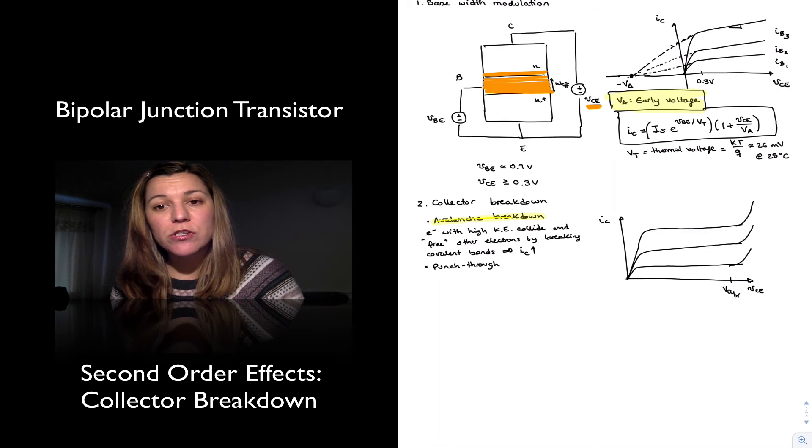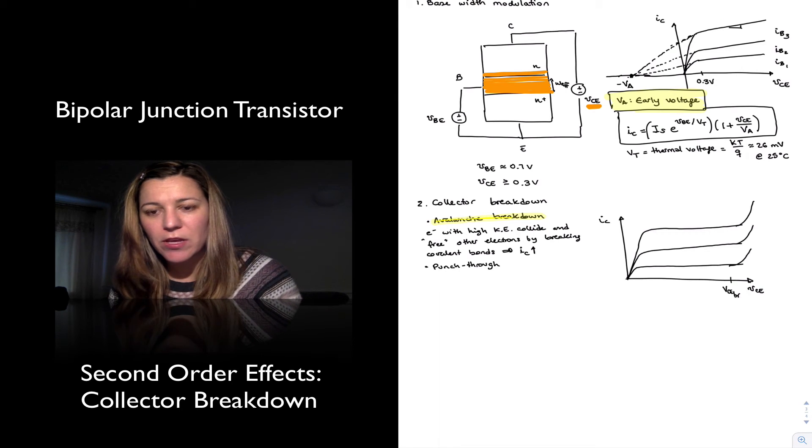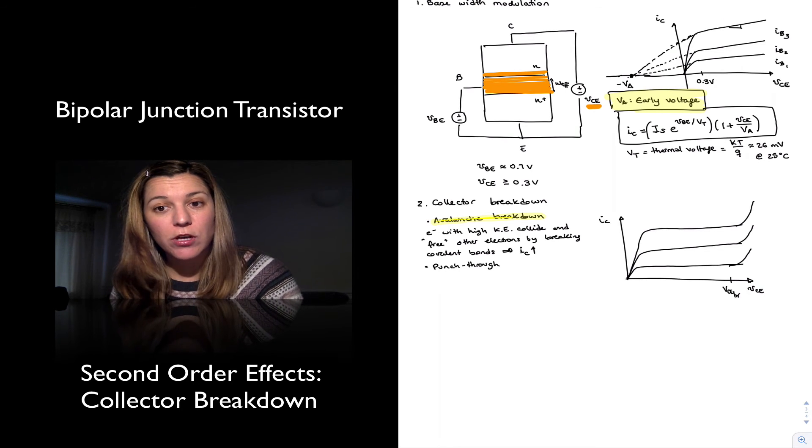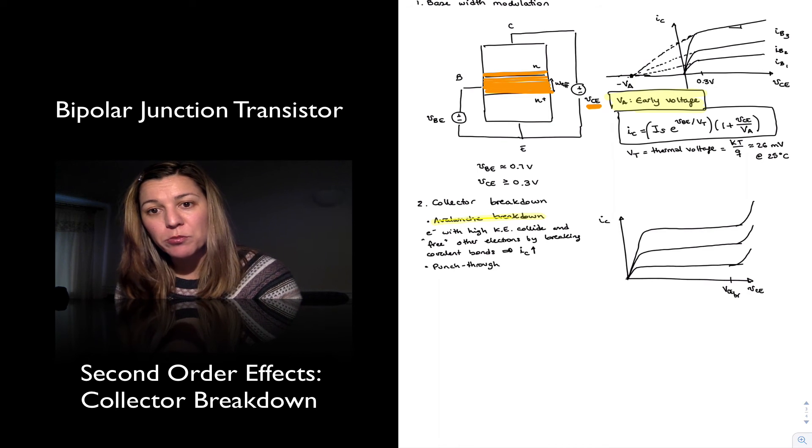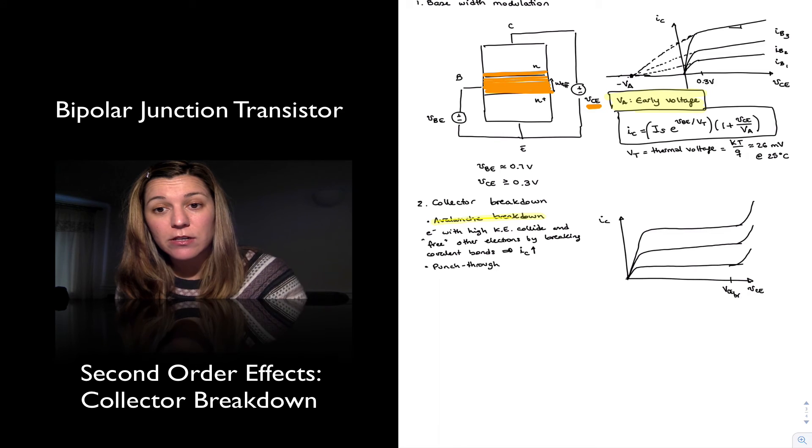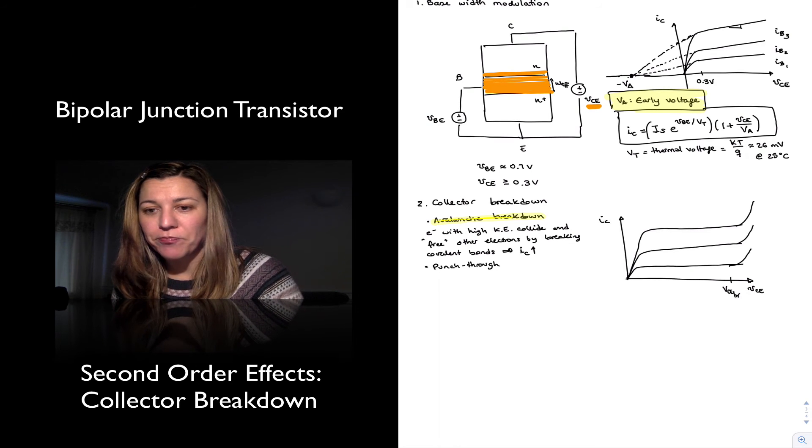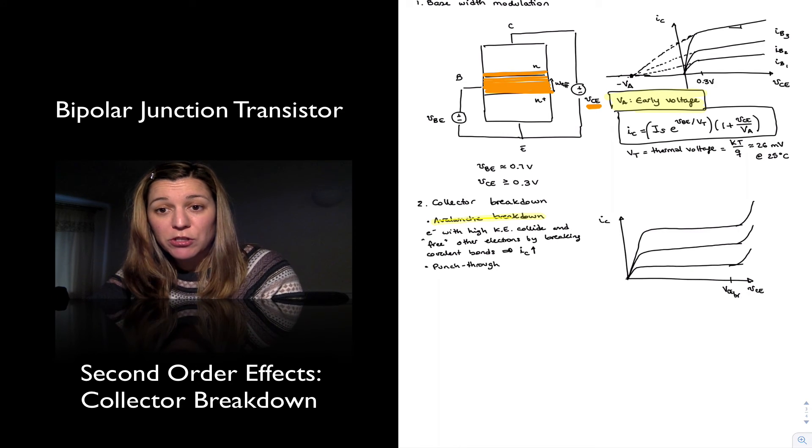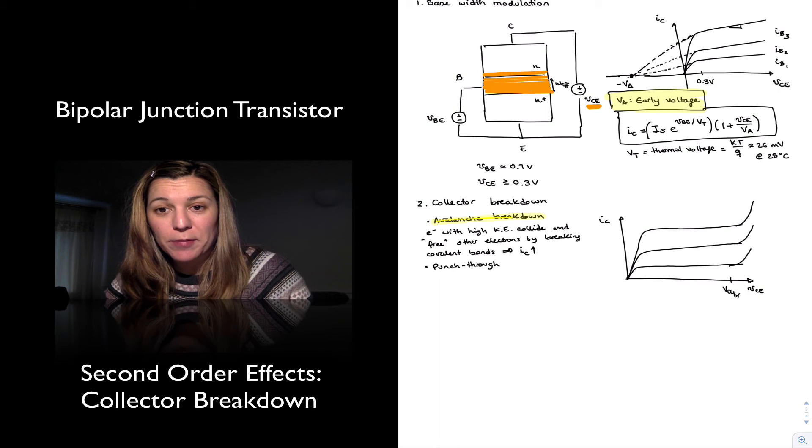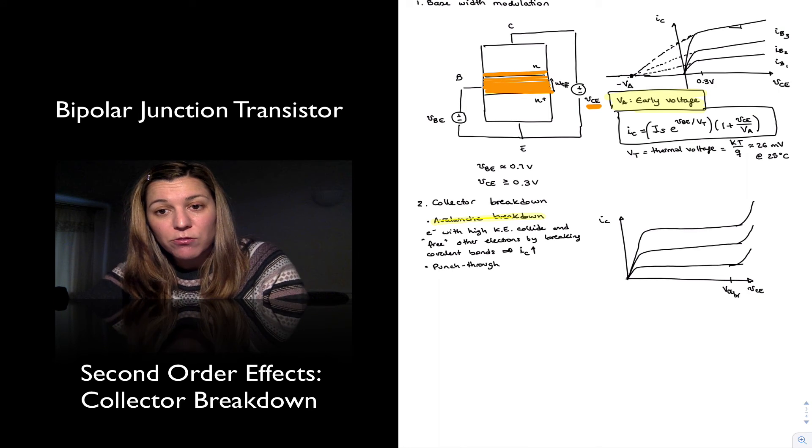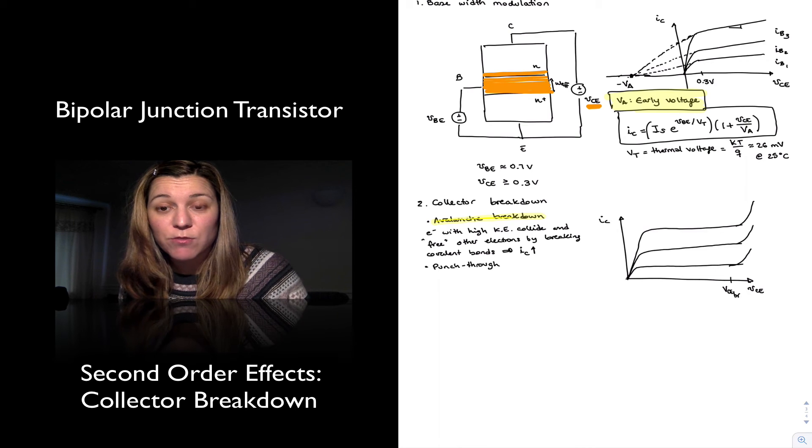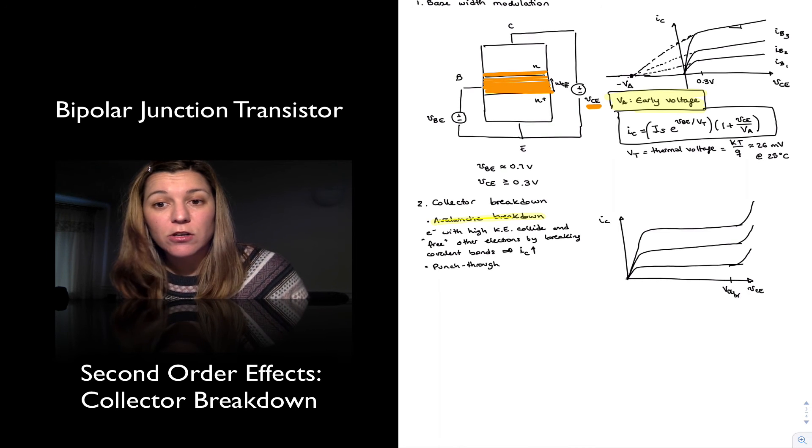occurs when you keep increasing your collector to emitter voltage. And as we mentioned previously when we were talking about base width modulation, as you continue to increase that voltage, your depletion region extends further and further into the base. Eventually, your depletion region will cover the entire width of the base, will reach all the way to the emitter, in which case you have no effective width of your base any longer.